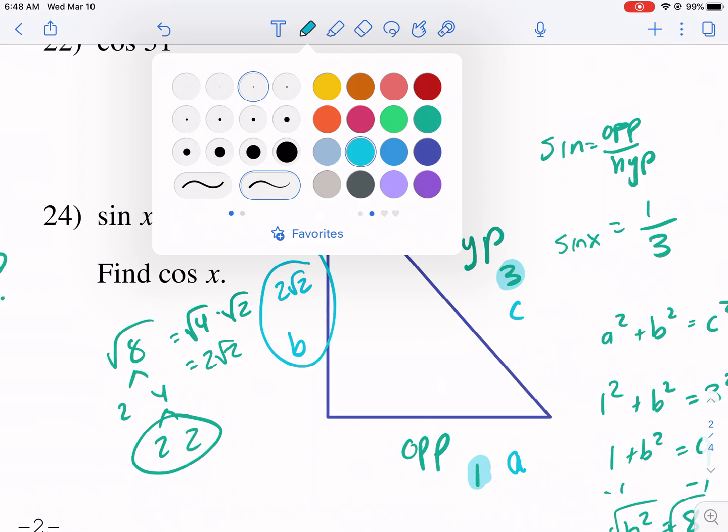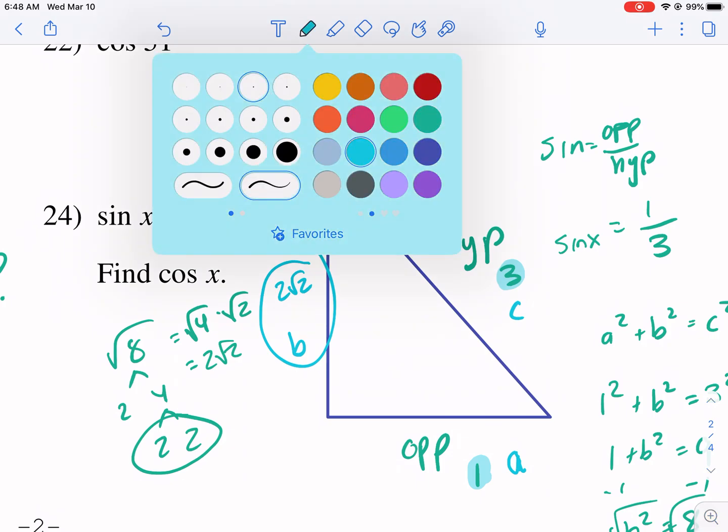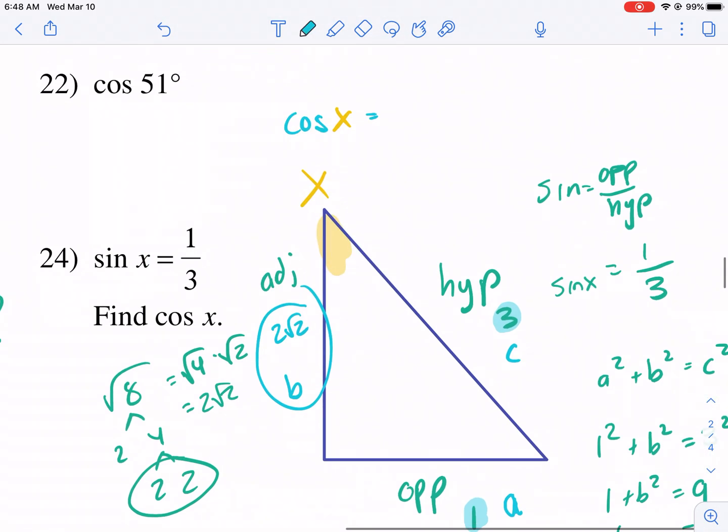So now I can find cosine of x. Why? Because I have my adjacent side now, 2 square root of 2 and then I have my hypotenuse which is 3. So I say cosine of, look at this, x. How cool is that? Equals 2 radical 2, that's my adjacent side, over my hypotenuse, 3. And that's as reduced as it can be. So I would just leave it like that.